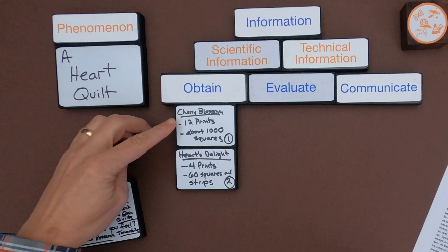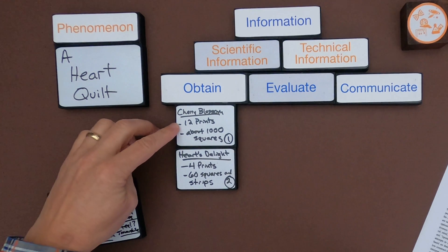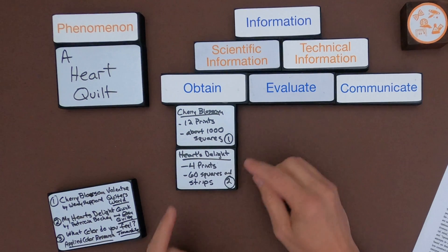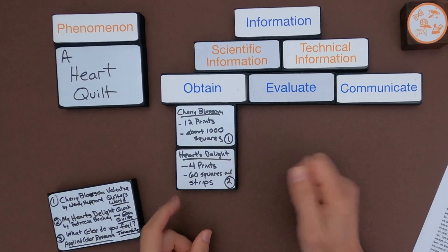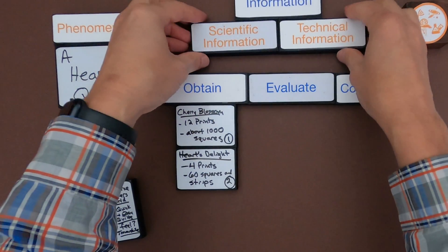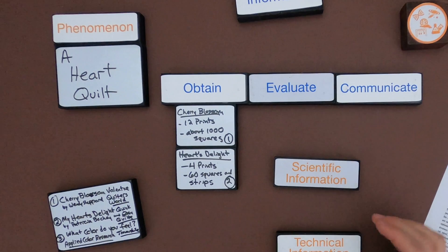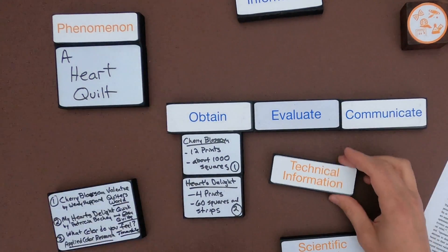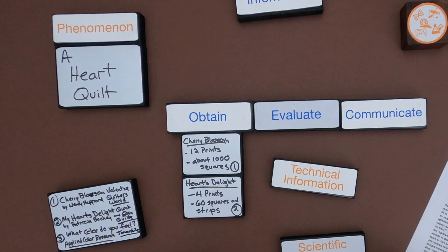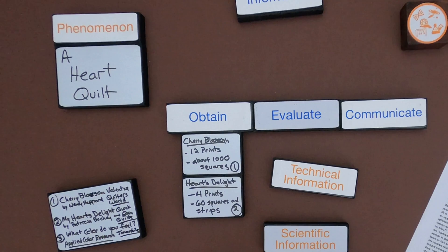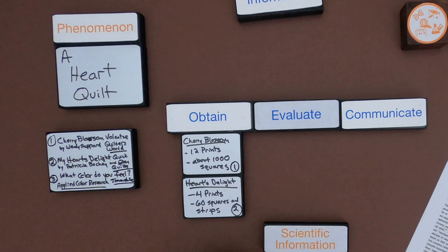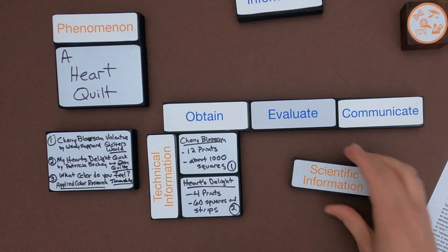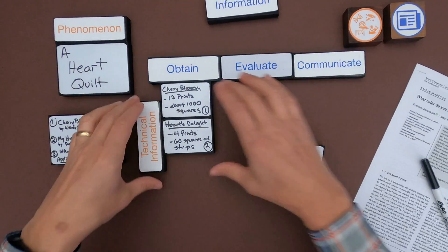For the Cherry Blossom design, there are 12 prints that I would have to buy — different types of fabric — and I'd have to cut it into about a thousand squares. With the Heart's Delight, there'd only be four prints and 60 squares. The next thing is to determine: is this technical information or scientific information? Technical information deals with procedures, specifications, or methods, whereas scientific deals with experiments. I would say both of these are technical information. Now let me gather some scientific information from my other source.